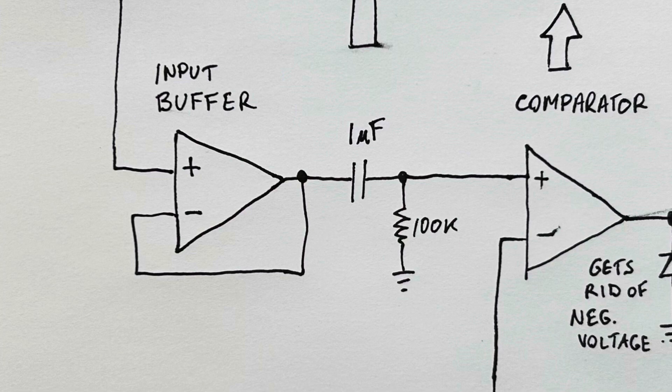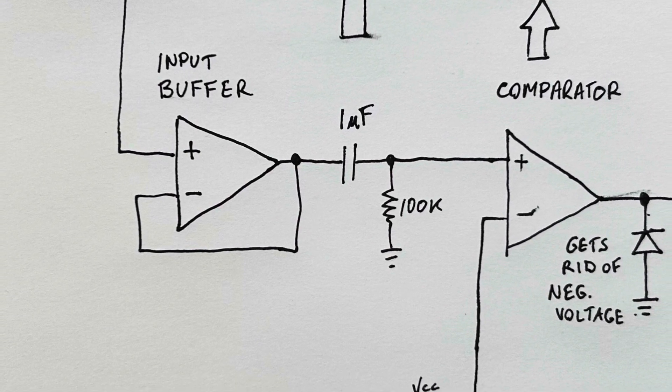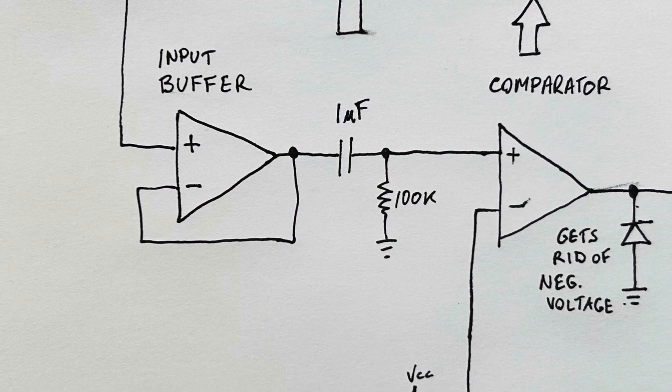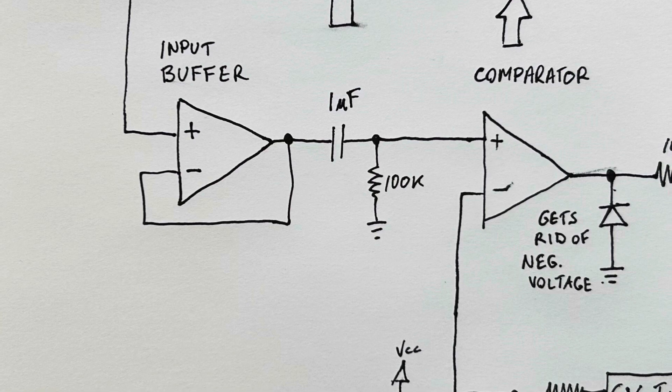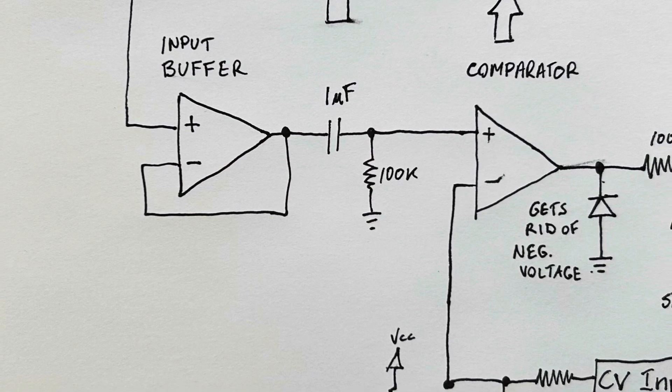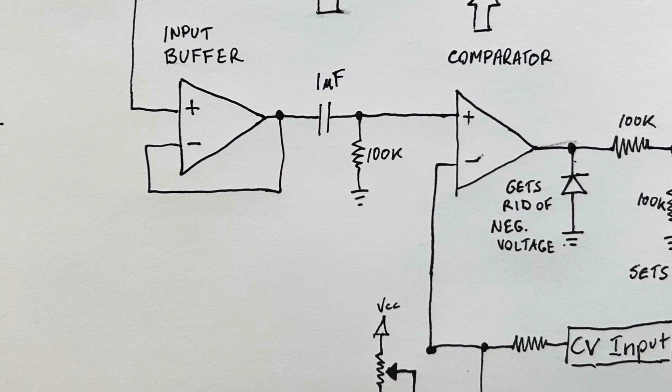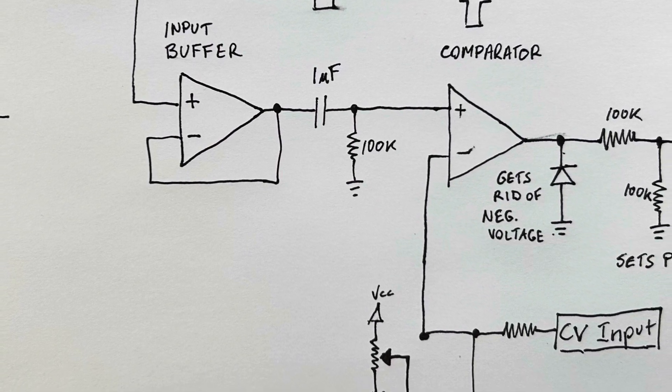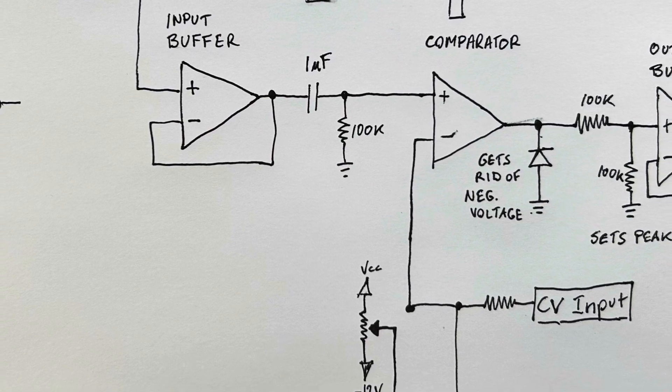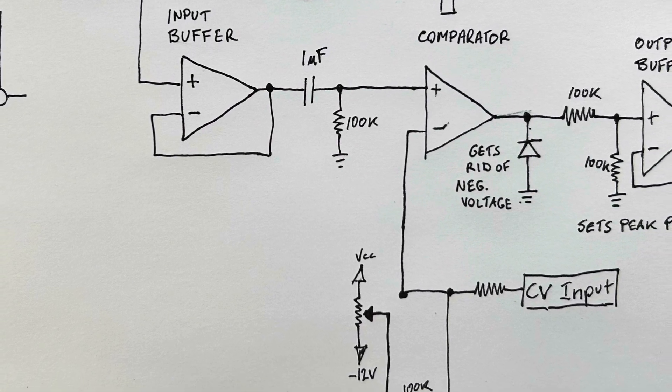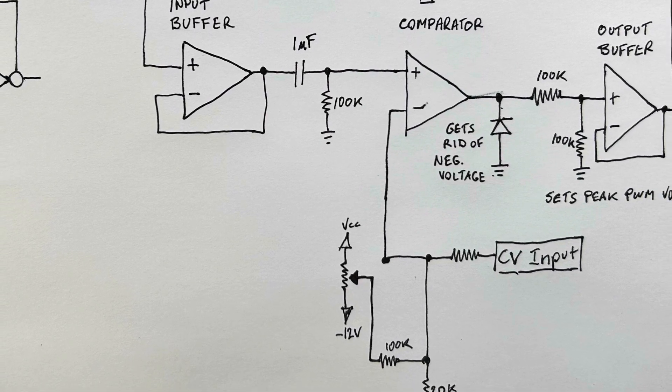That signal then goes into the non-inverting input of another op amp set up as a comparator. The inverting input is the reference voltage and this is basically the control voltage input of the PWM generation signal. The output of that comparator either goes to the positive rail or the negative rail based on whether the inverting input is greater than or less than the non-inverting input.